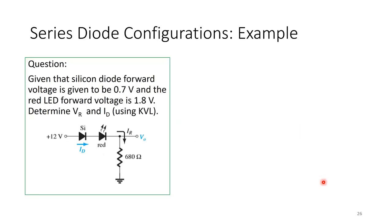Another example: given a silicon diode with forward voltage 0.7 volts in series with a red LED with forward voltage 1.8 volts, determine Vout and ID.